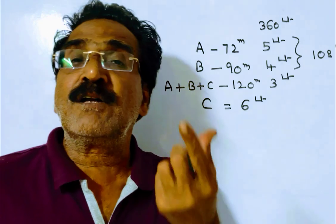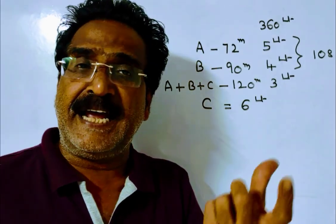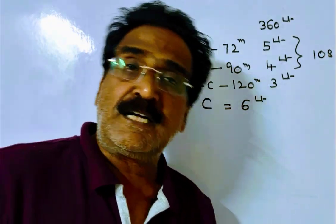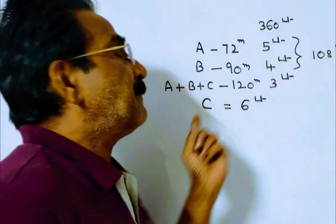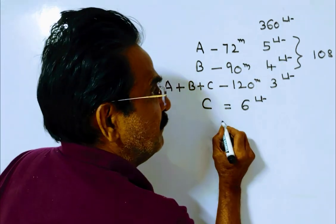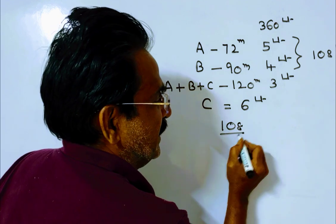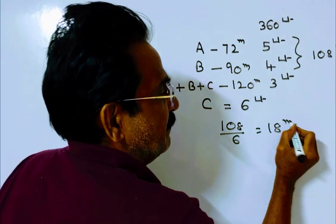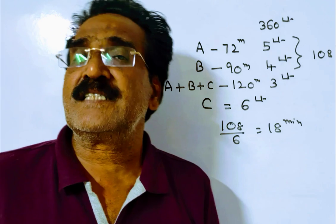There is 108 liters of water in the tank. Pipe C can empty 6 liters of water per minute. So pipe C can empty the tank in 108 by 6, that is equal to 18 minutes. 18 minutes is your answer.